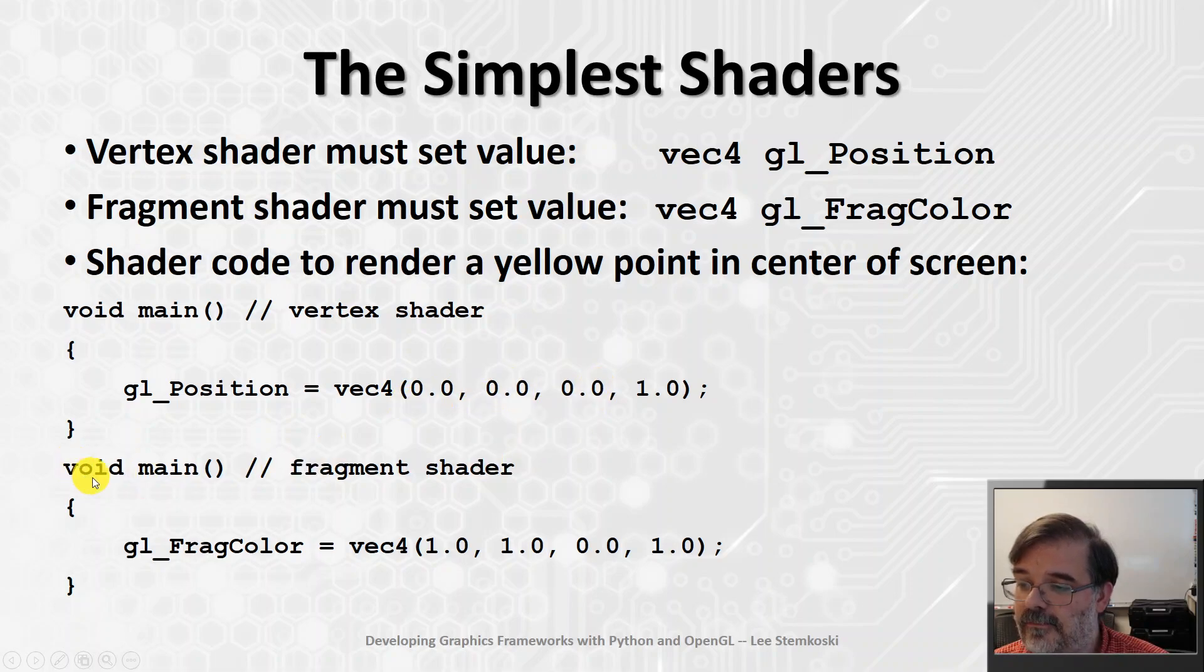And then, in the fragment shader, again, simplest possible case, let's just assign a color, a constant color, to that point. And in this case, we're assigning the vec4, 1, 1, 0, 1. So this means 100% of red and green, and no blue. That corresponds to a yellow color. And the 1 in the alpha component, that just means it's opaque.